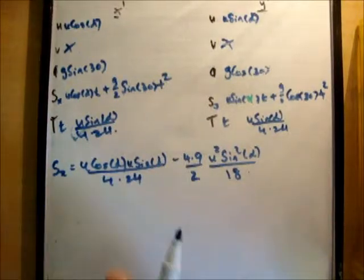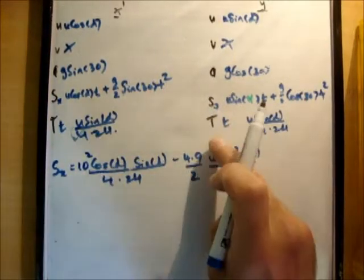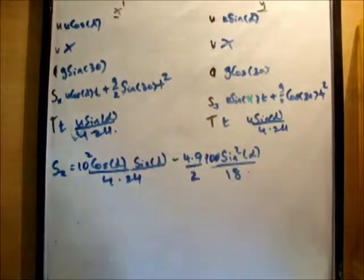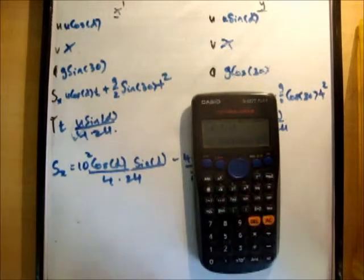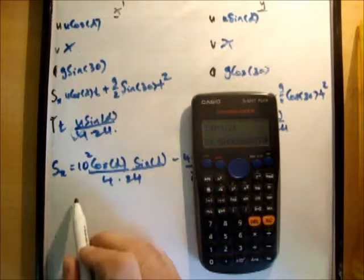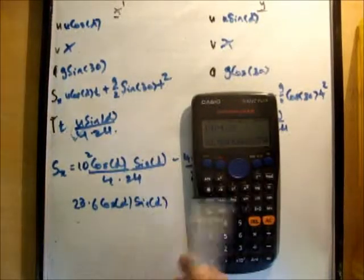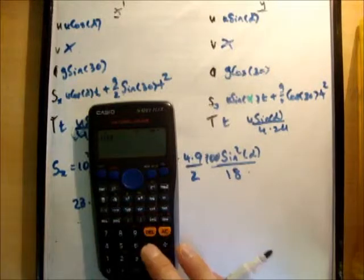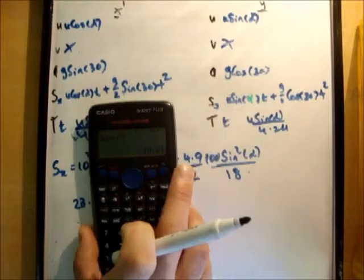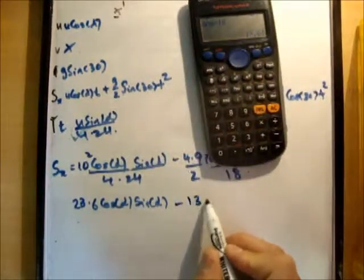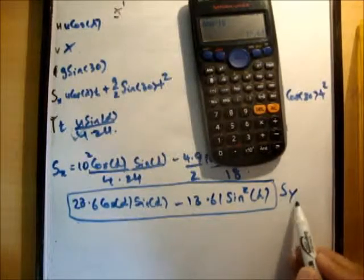So I'm just going to get rid of the decimals. So we know that u is equal to 10. We're given that in the question. So this becomes 100. So 100 divided by 4.24 is equal to 23.58, say 23.6 cos alpha, sine alpha. And then we have 100 multiplied by 4.9 divided by 2 divided by 18. And we get 13.61 sine squared alpha. And that is the final expression we need for the maximum range, s sub x max.